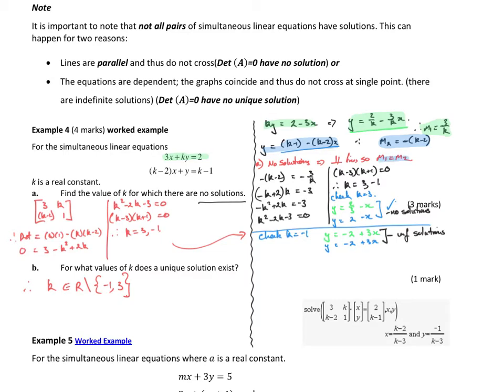So if I equate those two gradients equal to each other, minus (k minus 2) equals negative 3 on k, bring my k across, multiply by negative sign through, I end up with this little quadratic equation there to solve. And if I solve that equation, I get k equals 3 or k equals minus 1.